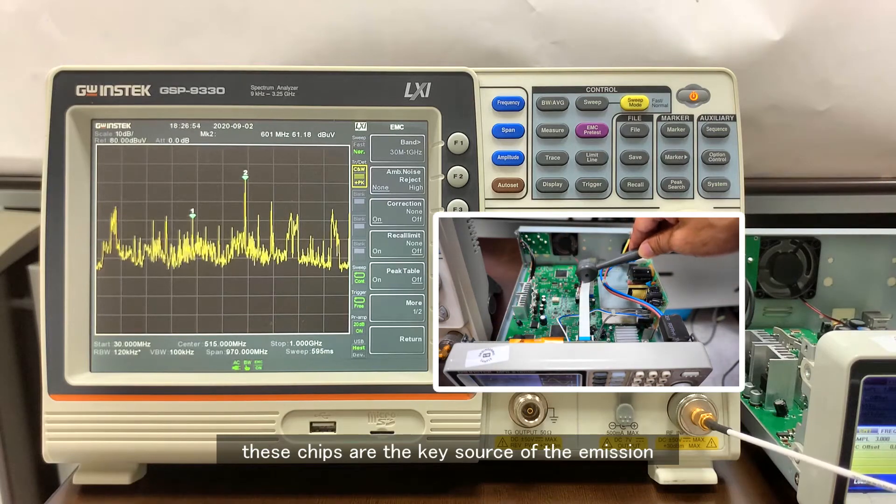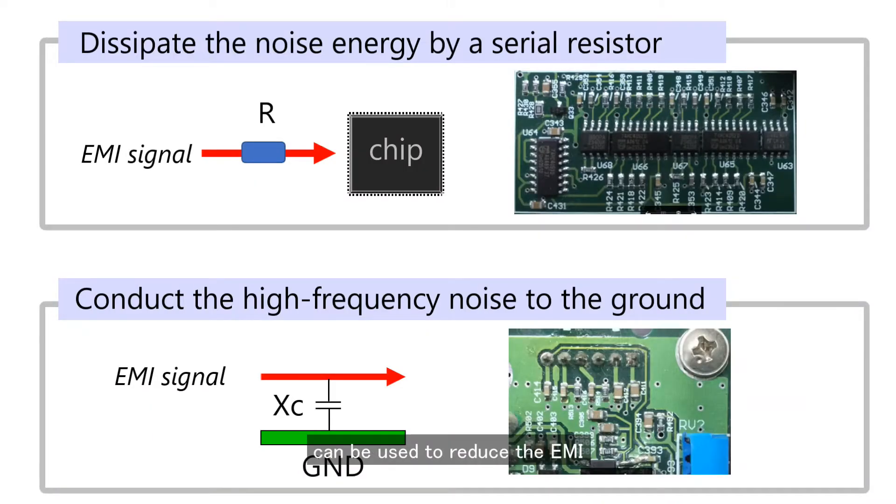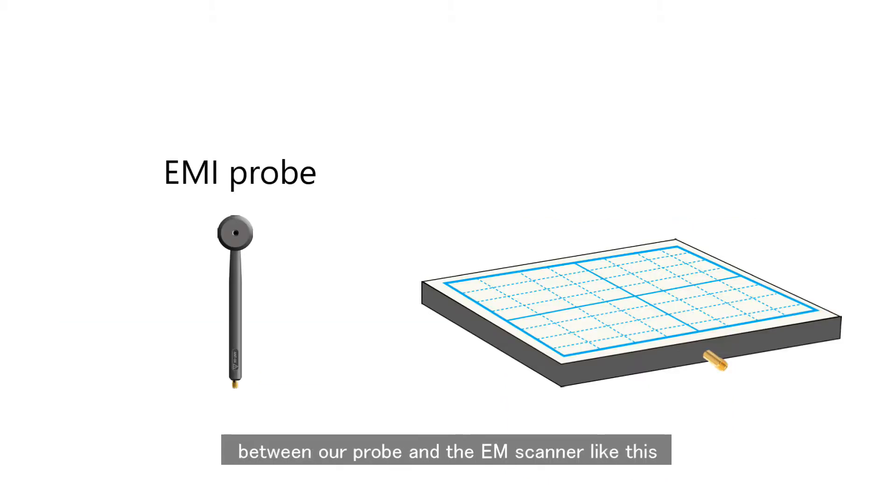These chips are the key source of the emission. A shunt capacitor can be used to reduce the EMI difference between the probe and the EM scanner.